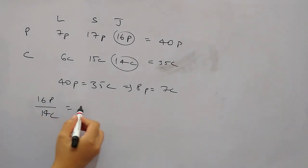So if 8p is 7c, then 16p would be 14c, and denominator is already 14c. So hence the required ratio is 1 is to 1. So you can say this is a very easy question.